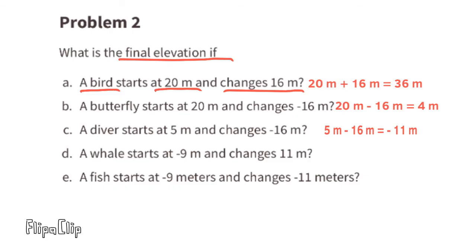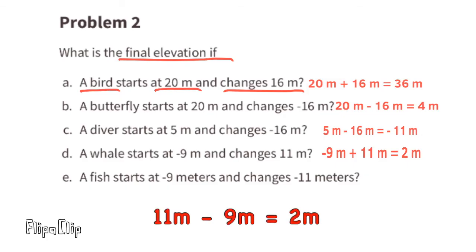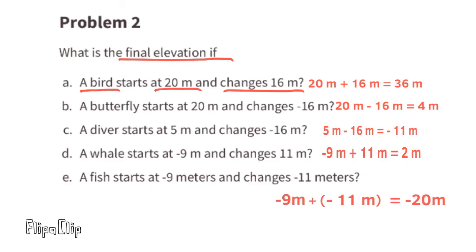Part D: a whale starts at negative 9 meters and changes 11 meters. We can write this as negative 9 meters plus 9 meters plus 11 meters equals 2 meters. To make the math easier, you can rewrite it as 11 meters minus 9 meters equals 2 meters. Part E: a fish starts at negative 9 meters and changes negative 11 meters. We can write this as negative 9 meters plus negative 11 meters equals negative 20 meters, or negative 9 meters minus 11 meters equals negative 20 meters.